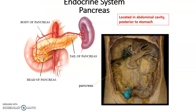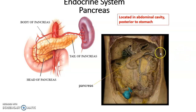Moving on to the pancreas — it is an organ of both the digestive system and the endocrine system. The pancreas is posterior to, behind the stomach, found in the abdominal cavity. You can see the spleen and the duodenum nearby.